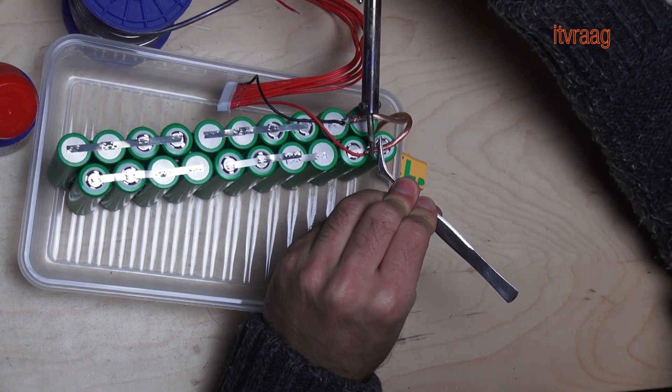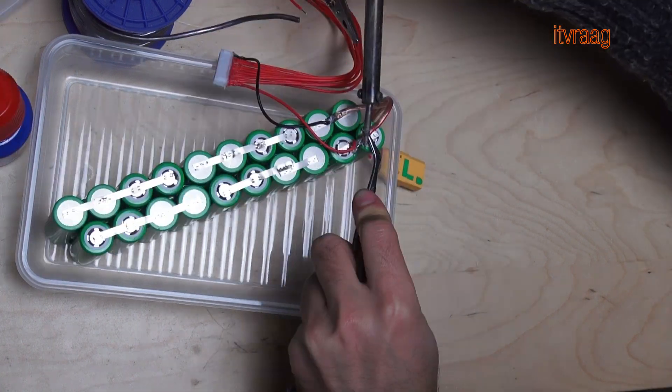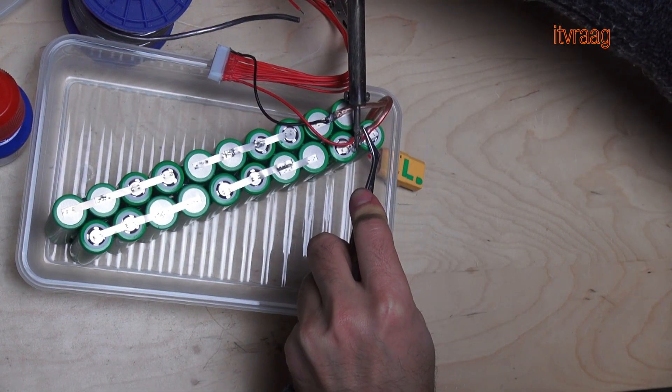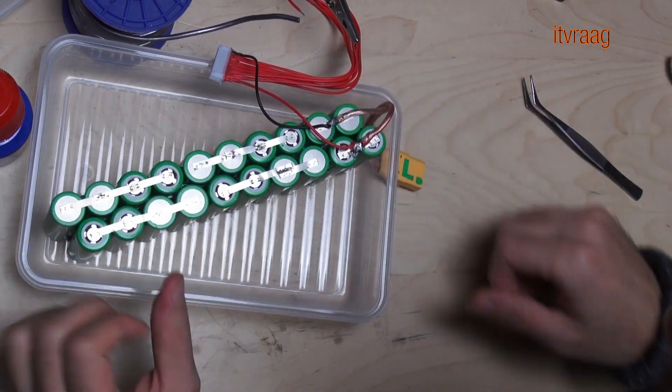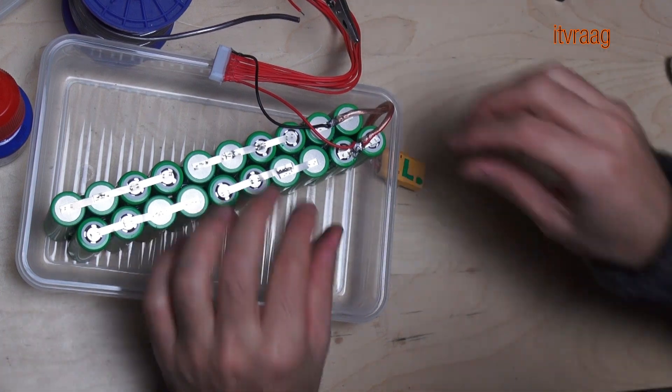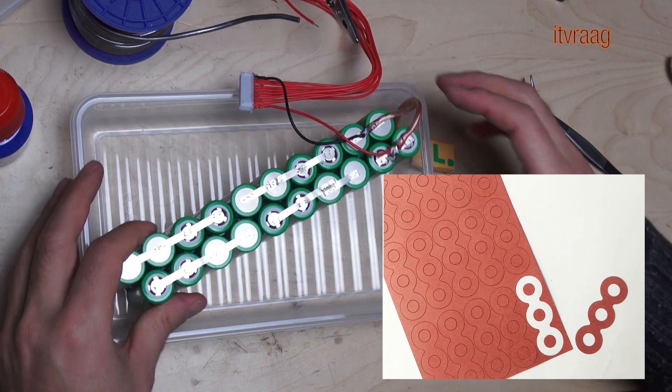Here I kept the soldering iron a few seconds too long and that caused a small short circuit. Later I added hot glue below the nickel strip for isolation. When soldering keep it below a few seconds. You can also use extra isolation on each cell.